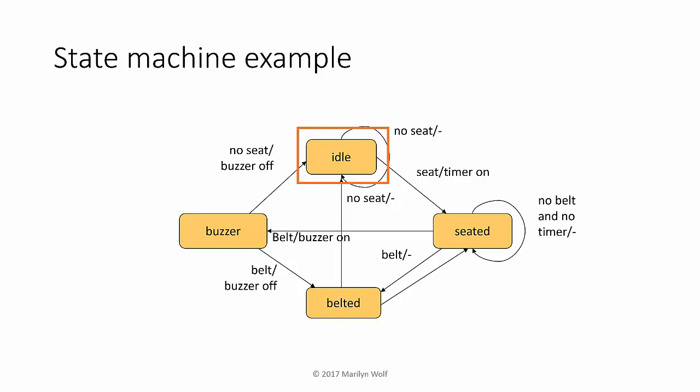In the idle state, no one is in the seat. When someone sits down, it moves into the seated state. If the person puts on the seat belt before the timer goes off, the state machine goes into the belted state. If instead the person doesn't click the seat belt, the timer will go off and the state machine will go into the buzzer state. Let's assume that eventually the person puts on the seat belt so the state machine goes into the belted state. When the person gets out of the seat and the pressure sensor is released, the state machine goes to the idle state.